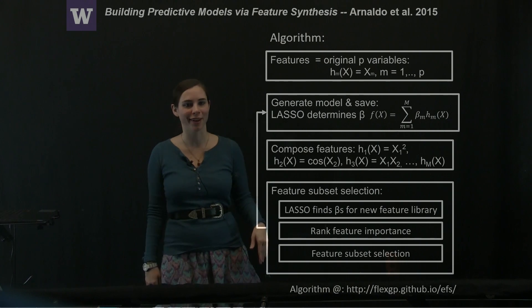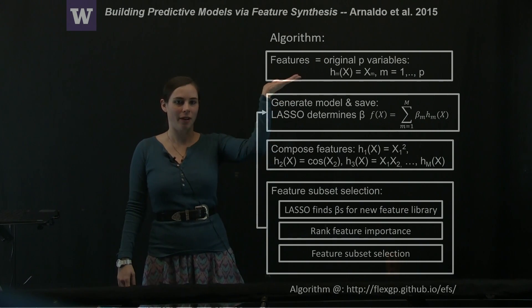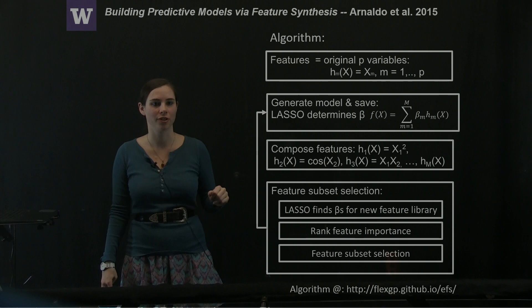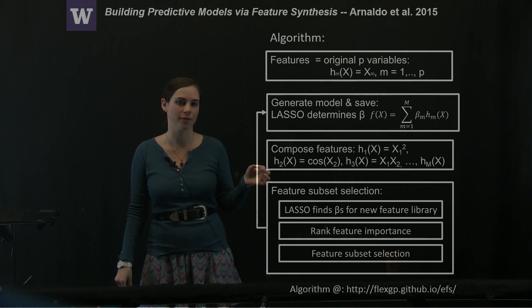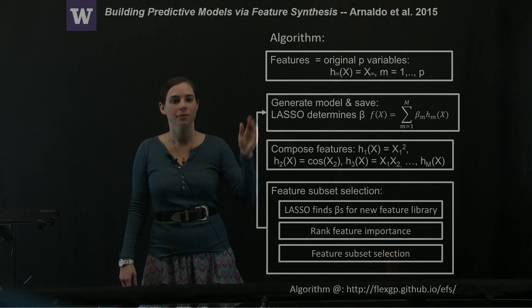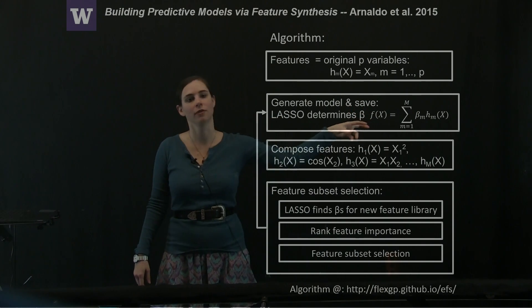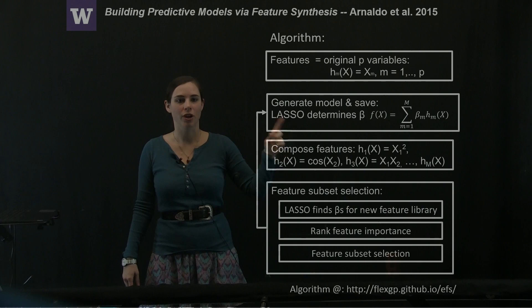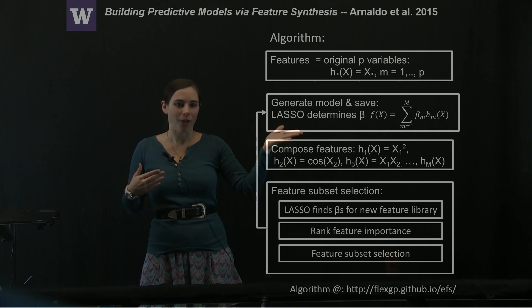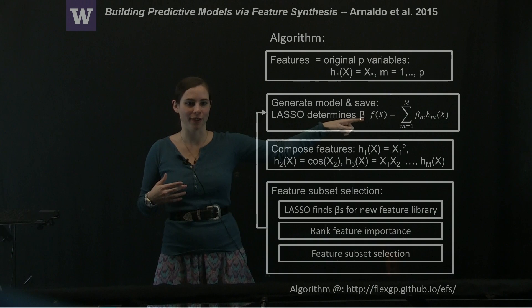All right. So overall, the algorithm is let's generate our original features that are just your original p measured variables x. Compose those into a linear combination of all of the features to generate the first model. Apply LASSO to determine your beta values.